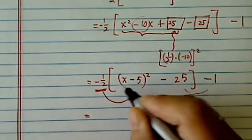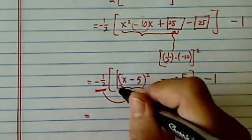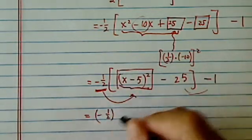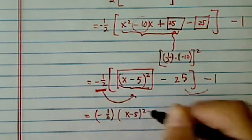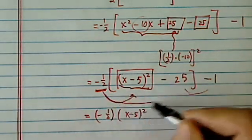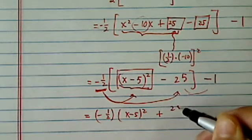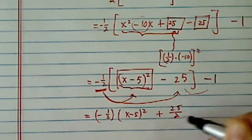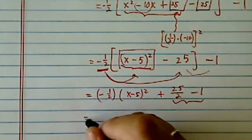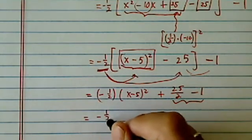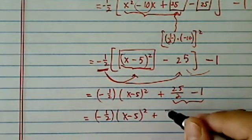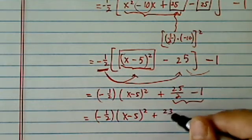Now we're going to take care of this — don't open this up; treat this one as a whole box. Then you have minus half times x minus five squared, then minus half times the second block becomes positive 25 over 2, minus 1. Now we can combine this one: minus half times x minus 5 squared plus 23 over 2.